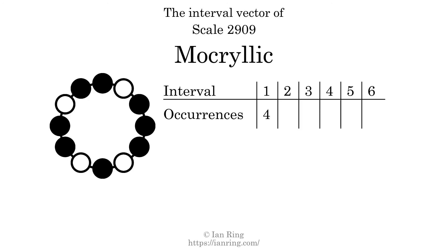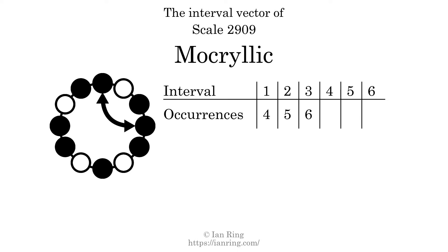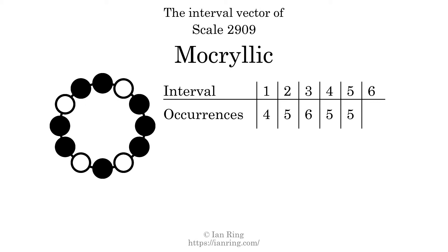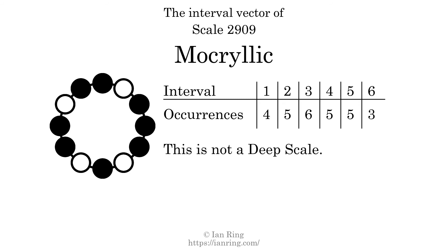The interval vector of a scale is a description of what intervals exist between its tones. There are four intervals with the size of one semitone, five intervals with the size of two semitones, six intervals with the size of three semitones, five intervals with the size of five semitones, and three intervals with the size of six semitones. Each interval does not appear in this scale a unique number of times, so this is not a deep scale.